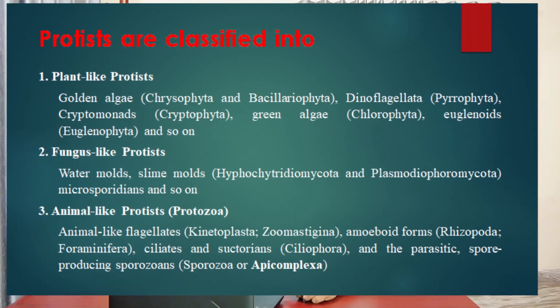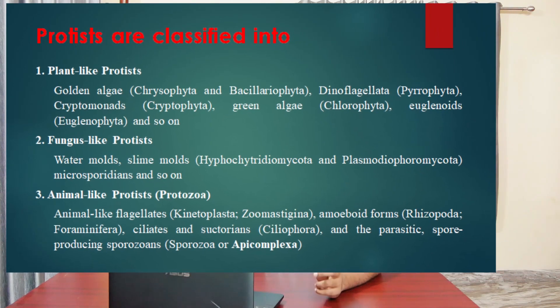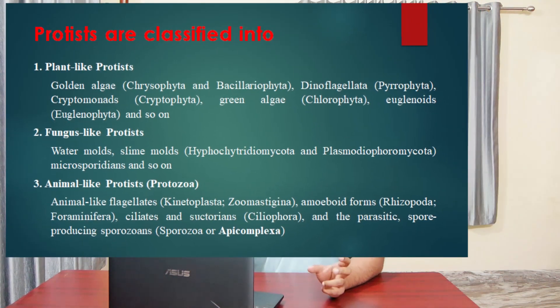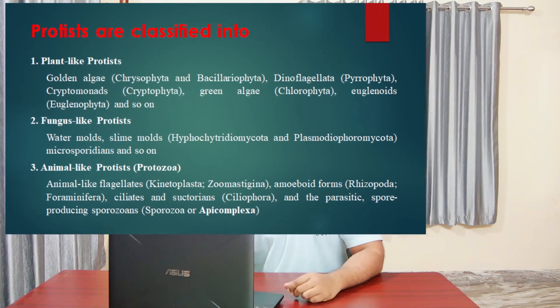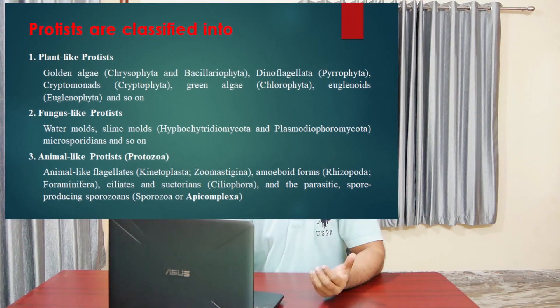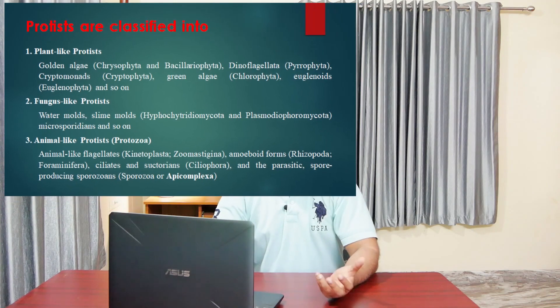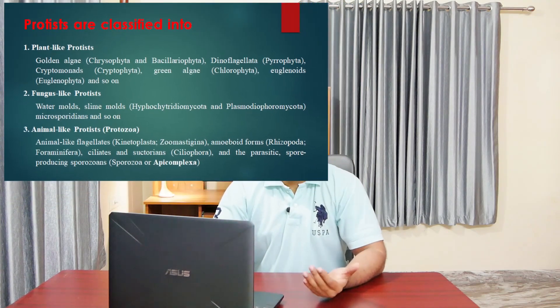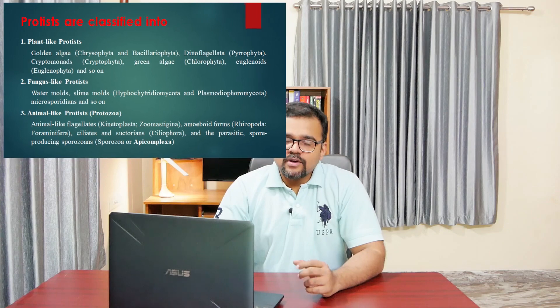Based on their resemblances to higher eukaryotic organisms, protists are classified into three groups: plant-like protists, fungi-like protists, and animal-like protists.